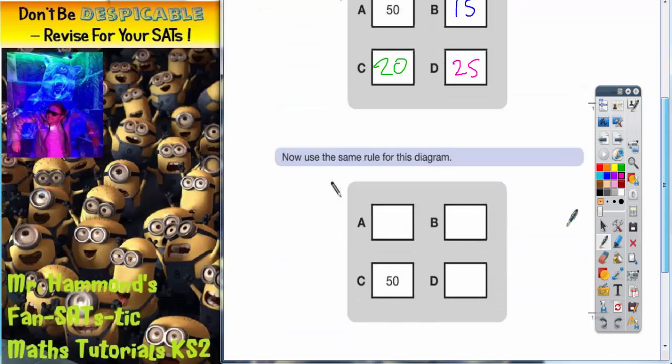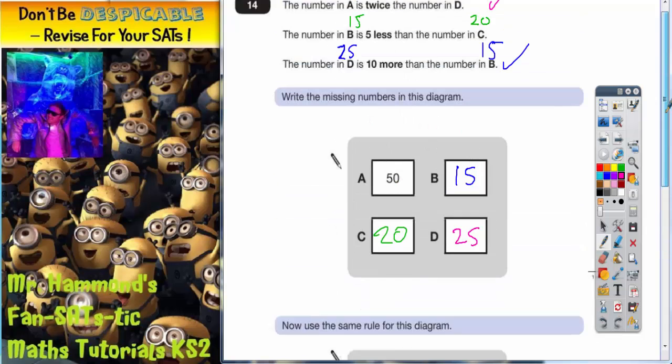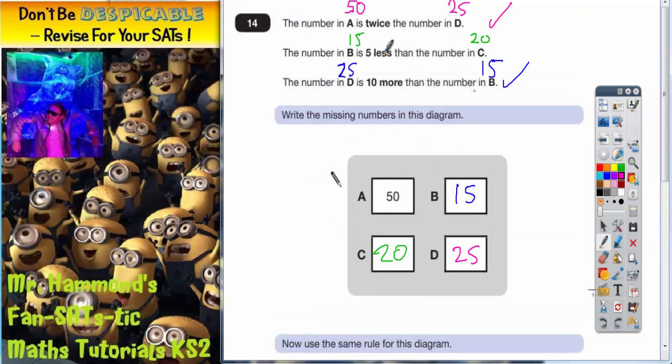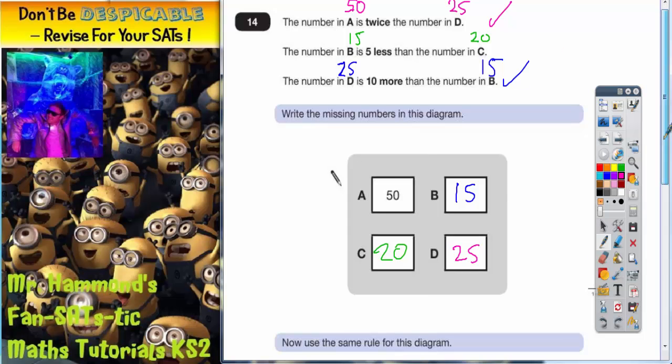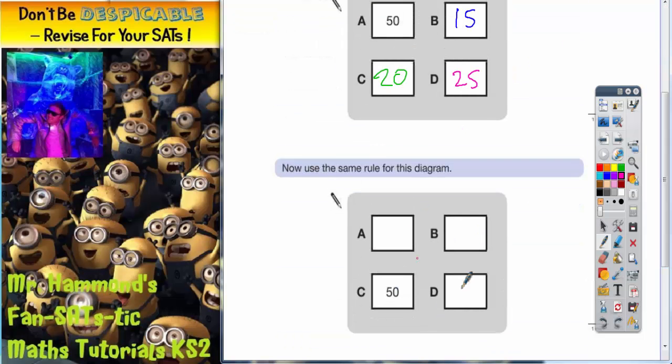Let's scroll down. It says, now use the same rule for this diagram. So let's see what we can do. The number A is twice the number in D. Well, at the moment, we haven't got A or D, so we're going to have to come back to that clue.